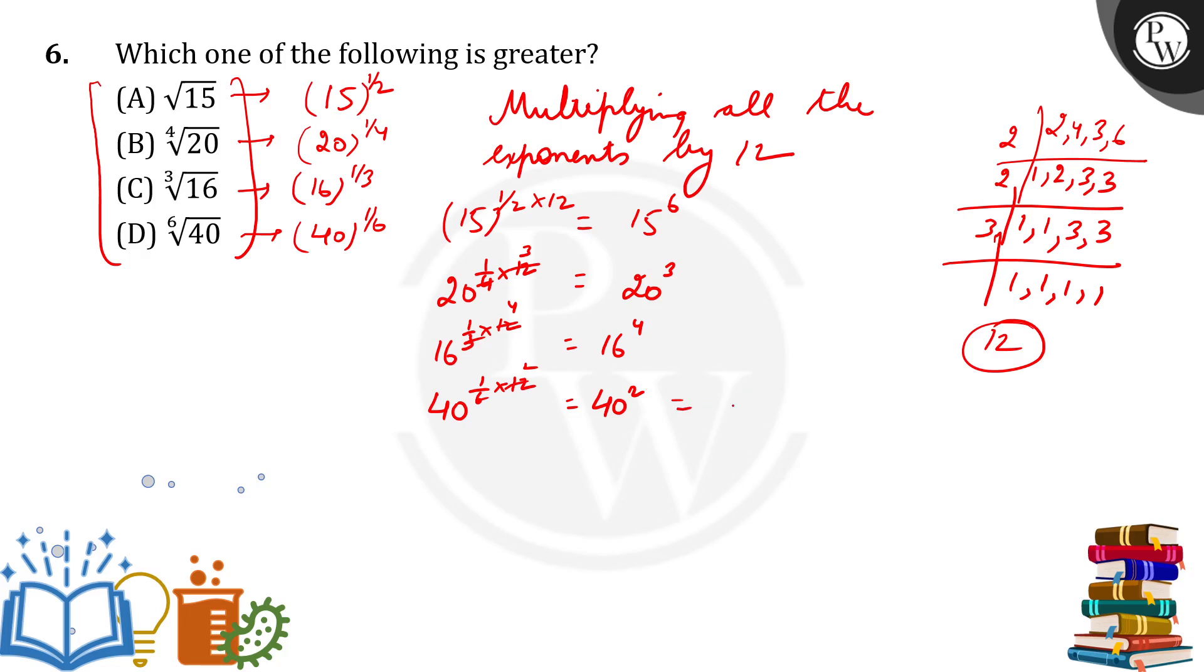So, 40 squared equals 1,600. 16 to the power 4 comes out to 65,536. 20 cubed comes out to 8,000. And 15 to the power 6 comes out to 11,390,625.